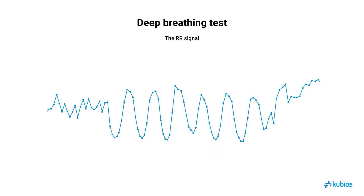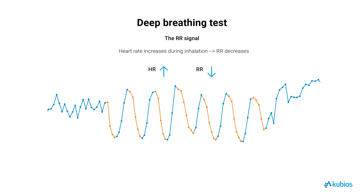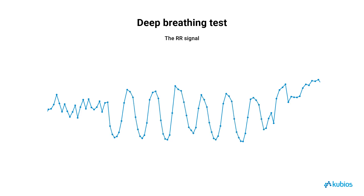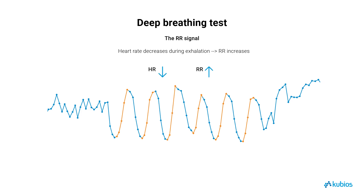During inhalation, heart rate increases. This acceleration occurs because the diaphragm contracts and descends, expanding the thoracic cavity and reducing intrathoracic pressure, which facilitates air intake. The resulting decrease in arterial blood pressure leads to baroreceptor deactivation and a reduction in vagal tone, ultimately increasing heart rate. Conversely, during exhalation, heart rate decreases. This deceleration happens as the diaphragm relaxes and ascends, compressing the thoracic cavity and increasing intrathoracic pressure, which expels air from the lungs. The consequent rise in arterial blood pressure activates baroreceptors, enhancing vagal tone and thereby reducing heart rate.